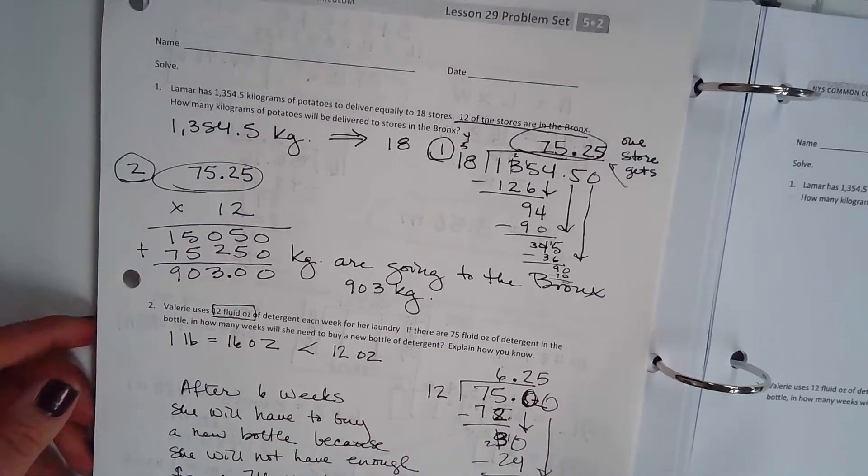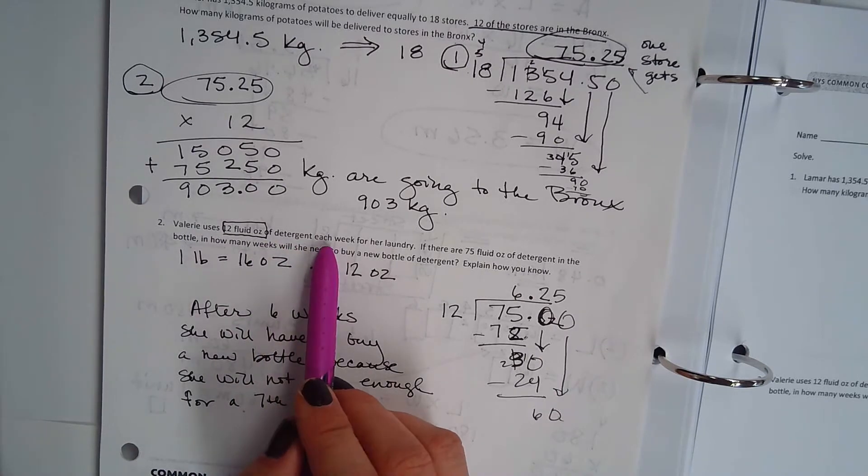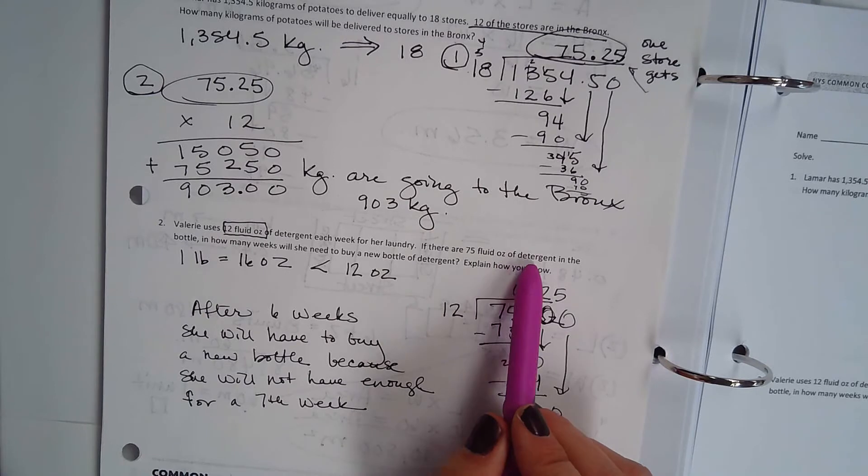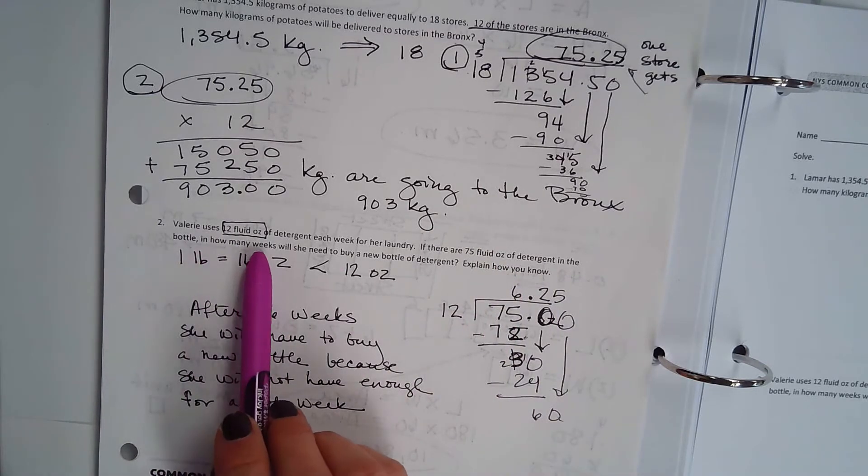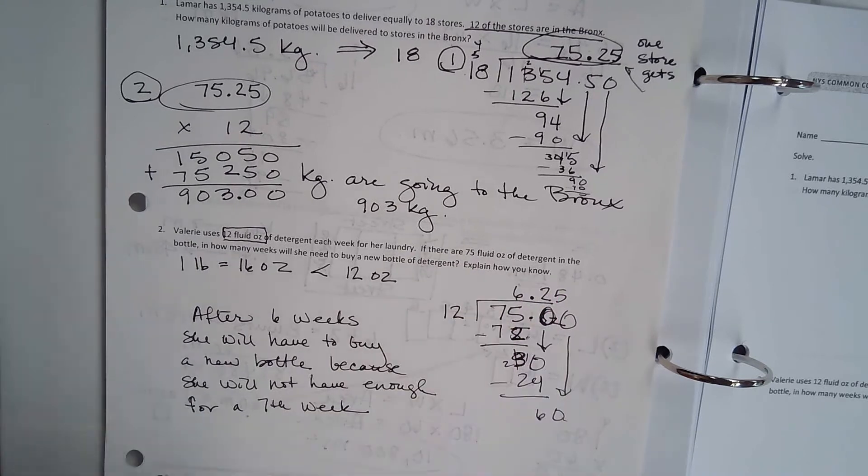Then we have Valerie uses 12 fluid ounces of detergent each week in her laundry. If there are 75 fluid ounces of detergent in the bottle, how many weeks will she need to buy a new bottle of detergent? Explain how you know.